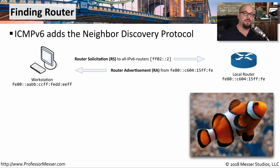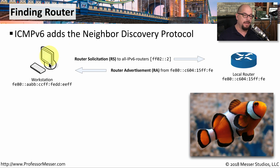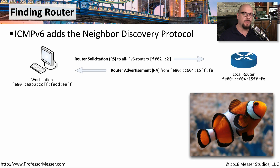Here's how the Neighbor Discovery Protocol uses router solicitation to find routers on the network. On this network, we have a workstation and a local router, but the workstation doesn't know where that router happens to be. So it sends an IPv6 multicast to FF02::2, which is a router solicitation to all IPv6 routers. All of the routers on this network will be listening for those multicasts, and if they receive a router solicitation, they'll send back a unicast frame — a router advertisement — that includes the MAC address of that local router.